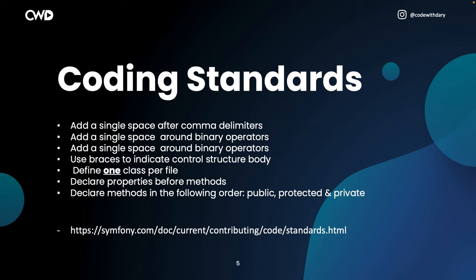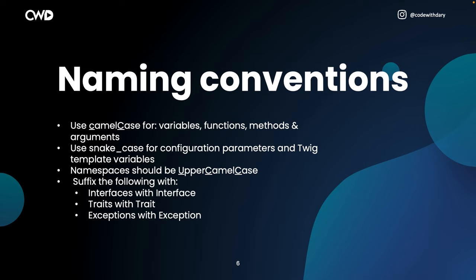Next to structural coding standards, we also have naming conventions. Use camelCase — first letter lowercase, every word after starts with a capital — for variables, functions, methods, and arguments. Use snake_case (underscore with all lowercase) for configuration parameters and Twig templates. Namespaces should always be PascalCase, so every first letter of every word is uppercase. Whenever you use interfaces, traits, or exceptions, they should start with a capital: interface with capital I, traits with capital T, exceptions with capital E.